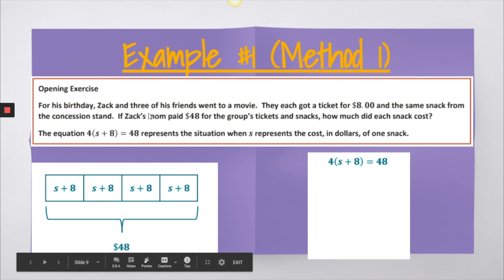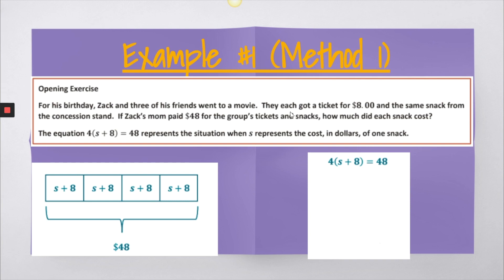Okay, so taking a look at our first example. For his birthday, Zach and three of his friends went to a movie. They each got a ticket for $8 and the same snack from the concession stand. If Zach's mom paid $48 for the group's tickets and snacks, how much did each snack cost? And here you can see that it gives you the equation that represents the situation when S is the cost in dollars of one snack. Now, notice up at the top, this is method one.